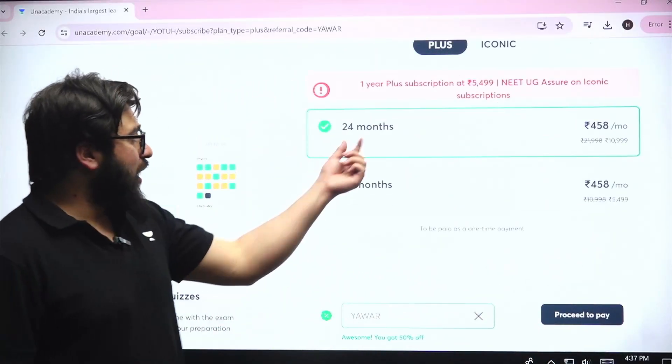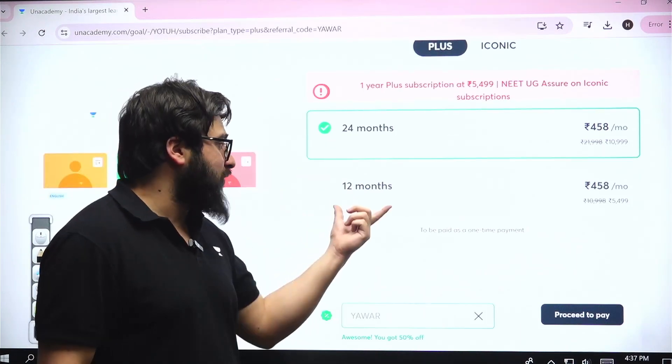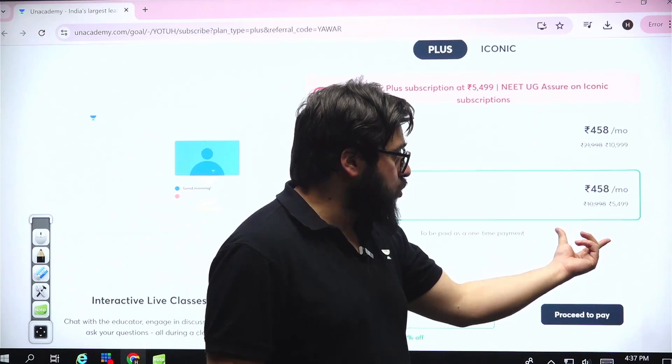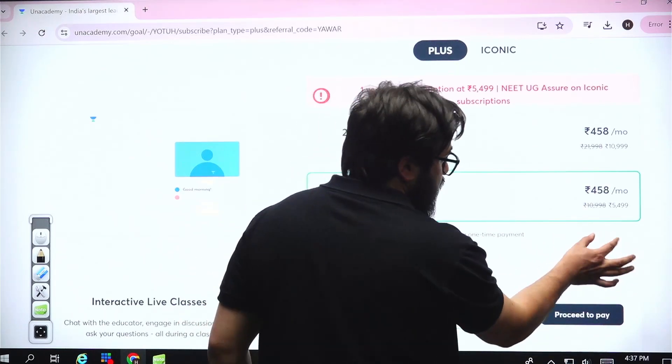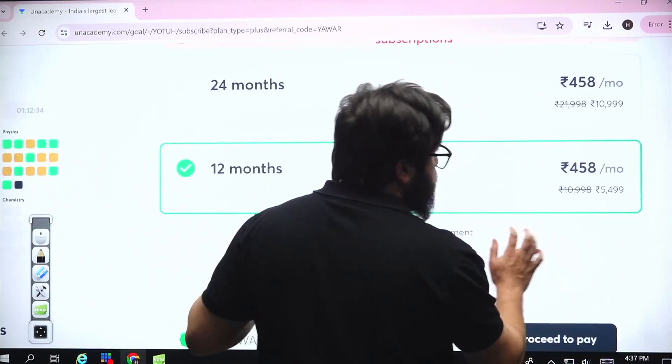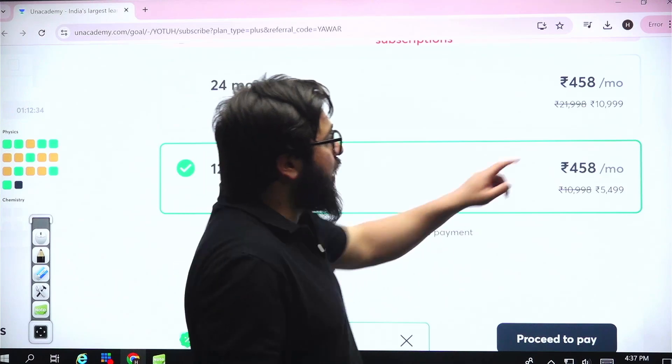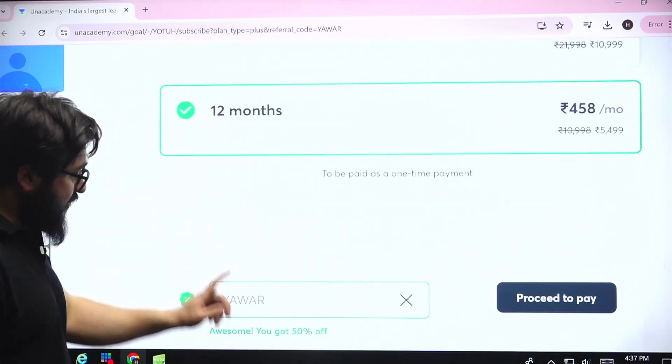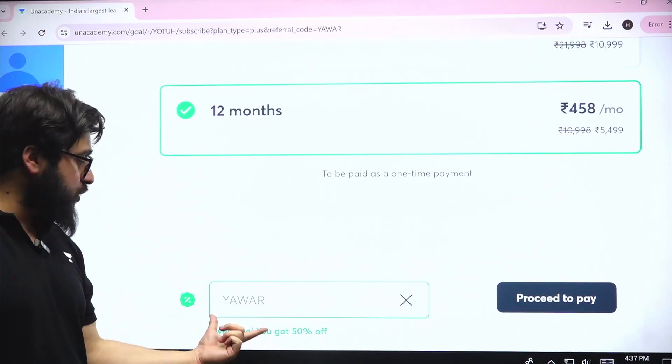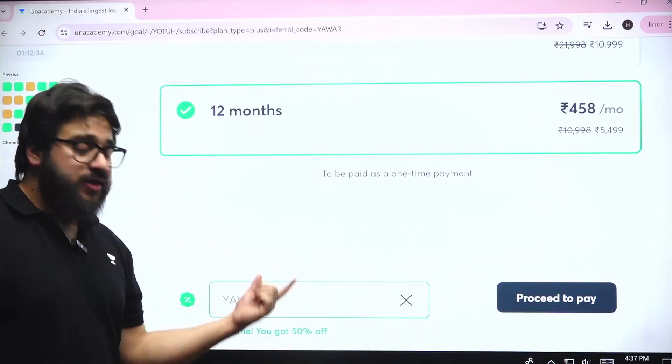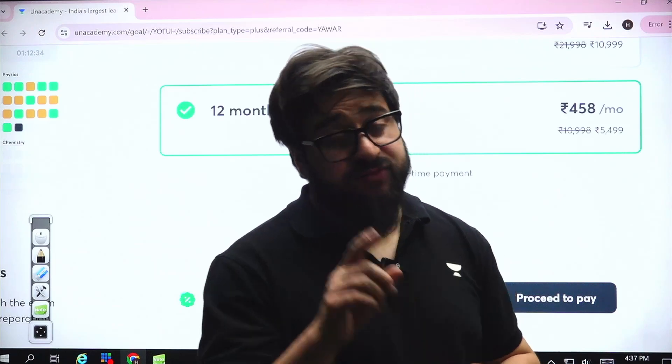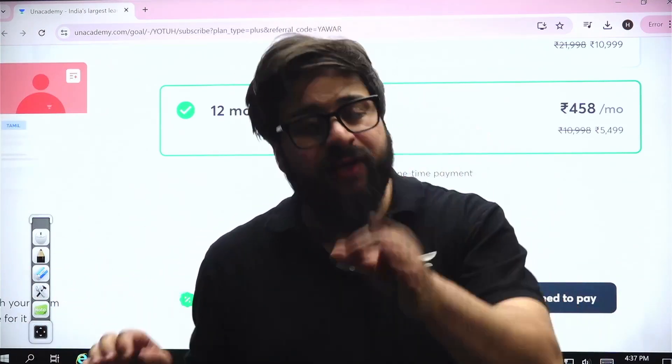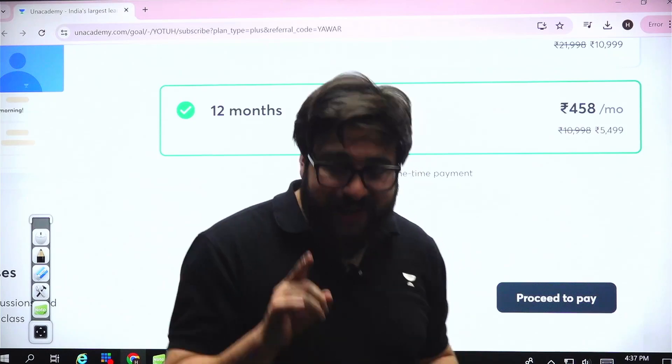There is a link in the description. Click on that link, you land on this page. Here you have got 24 months, you have got 12 months. You can buy the subscription for 12 months also, then you have to pay 5,499 rupees. For 24 months, you will have to pay 10,999 rupees. Then it will ask for a code. You will have to use my code, that is YAWAR, so you will get the maximum possible discount. We are starting the classes from 18th onwards. I don't want you guys to miss out any of the classes, so do it as soon as possible.